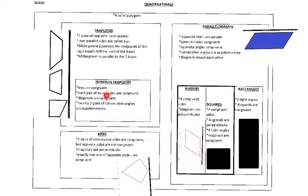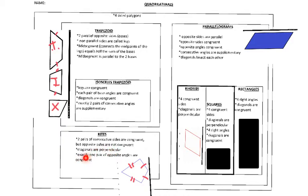An isosceles trapezoid is a specific type of trapezoid with all the regular trapezoid characteristics, plus the legs are congruent. Kites don't fall into trapezoids or parallelograms — in a kite, consecutive sides are congruent, meaning two sides that touch are congruent, but the opposite sides are not congruent. Kites also have two additional characteristics.